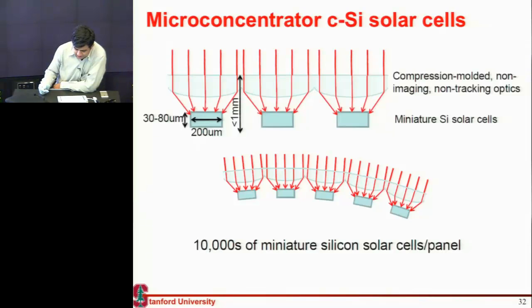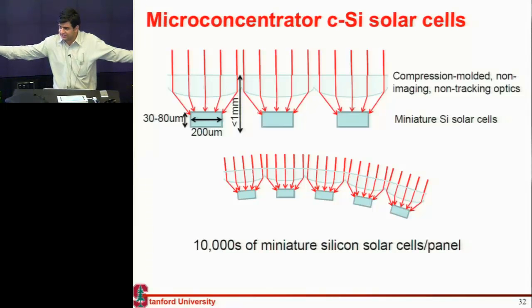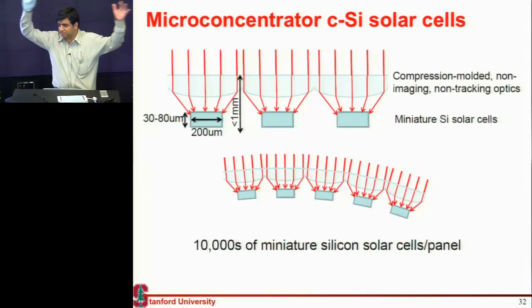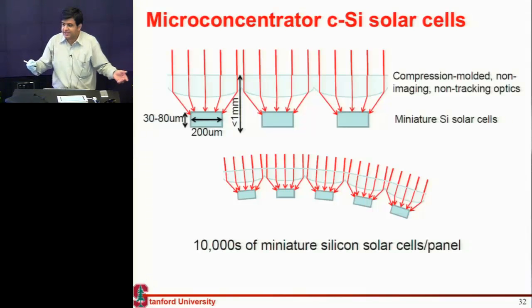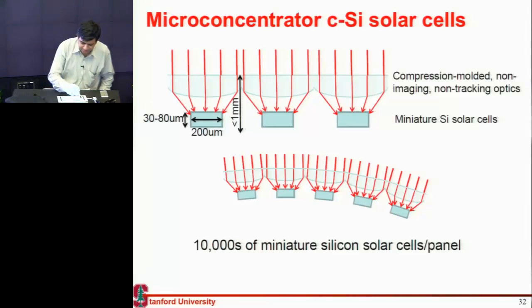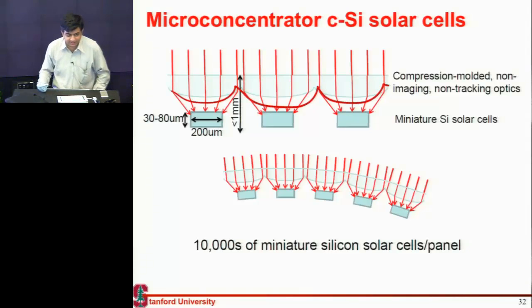Another idea is that if you have these small cells, one of the advantages you can get is essentially use microconcentrators. So instead of having these big lenses or big Fresnel lenses or these big discs, you just take a plastic and pattern it like this.